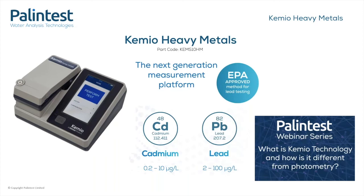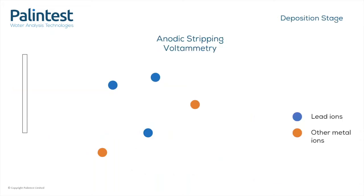If anyone missed it, the previous webinar on the comparison of Chemio technology to photometry is available on our website. Some of you may have previously seen that webinar which introduced you to the Chemio platform and how it compares with photometry, and went through a little on how Chemio disinfection sensors work. The general idea that all the calibration has been done for you and the method is easy to use with limited or no training still applies.